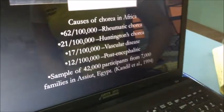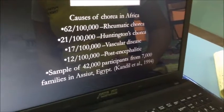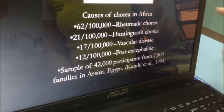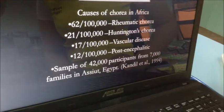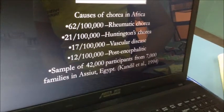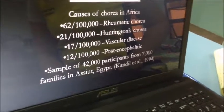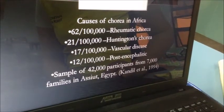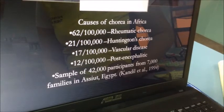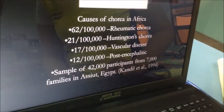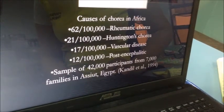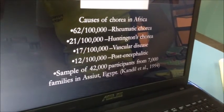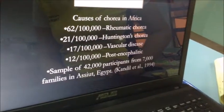The epidemiology of movement disorder classifications: causes of chorea in Africa include 62 per 100,000 rheumatic chorea, 21 per 100,000 Huntington's chorea, 17 per 100,000 vascular disease, and 12 per 100,000 post-encephalitic. This is based on a sample of 42,000 participants from 7,000 families in Asia, Egypt.